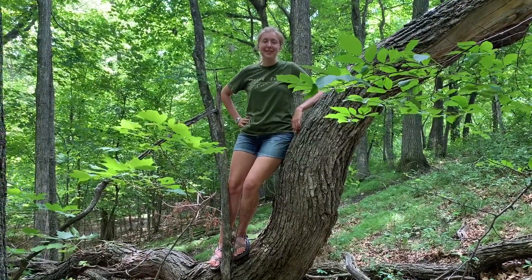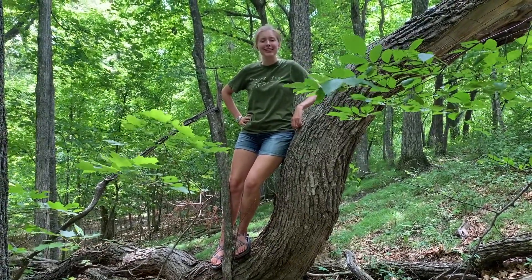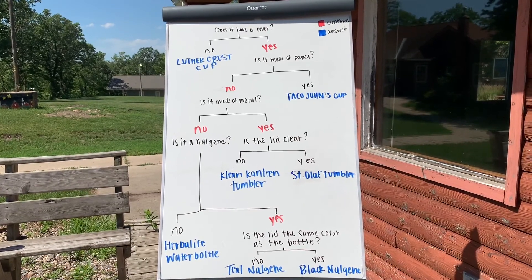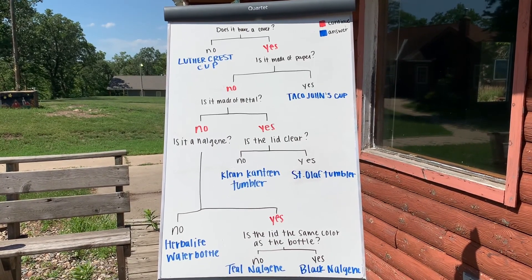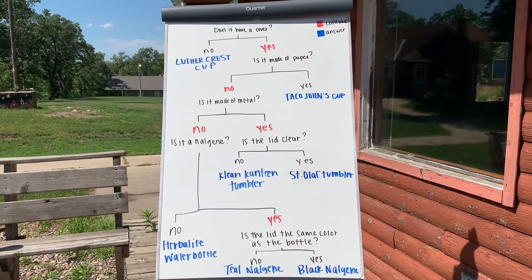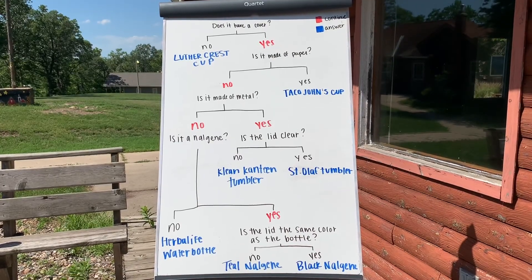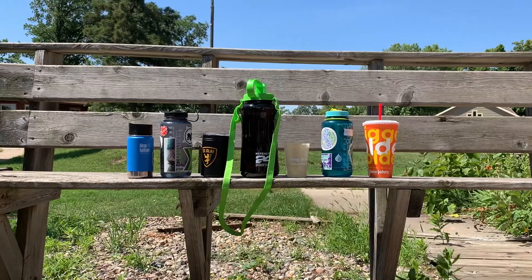We're going to show you how to make your own dichotomous key with items around your home or in nature. We made a dichotomous key for cups and water bottles. They're similar because they all hold liquid, but they have differences too.